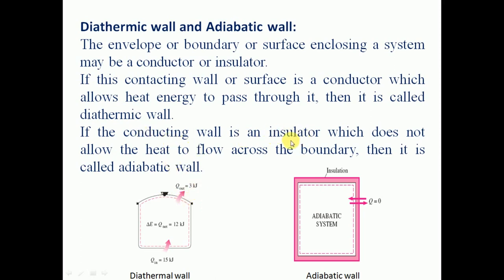If the conducting wall is an insulator which does not allow heat to flow across the boundary, then it is called an adiabatic wall. The enclosure system in this case is called an adiabatic system. Across this boundary there is no heat transfer taking place — it is completely insulated — that is why that wall is called an adiabatic wall.